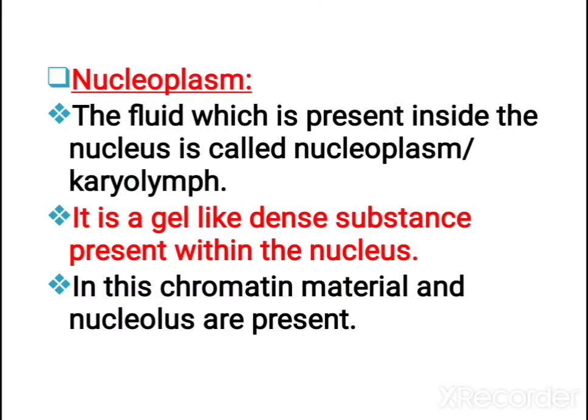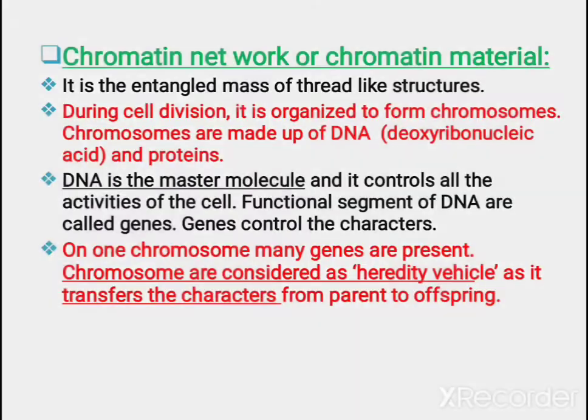Next is nucleoplasm. The fluid which is present inside the nucleus is called nucleoplasm. It can also be known as karyolymph. It is a gel-like dense substance present within the nucleus. The thin chromatin material — the fiber-like structure that is chromatin (chromosome) and nucleolus — are present in this nucleoplasm.